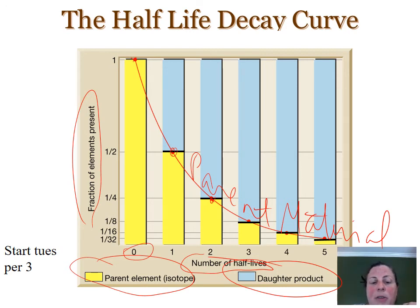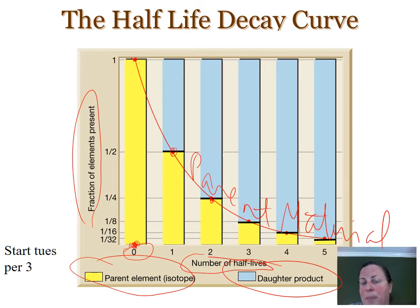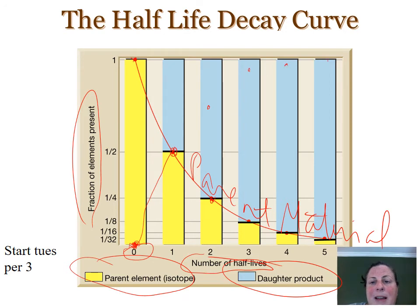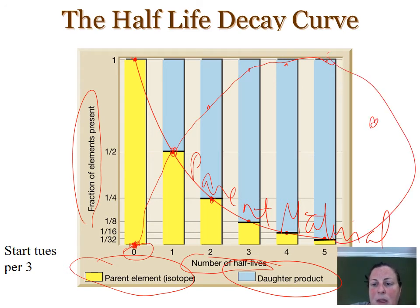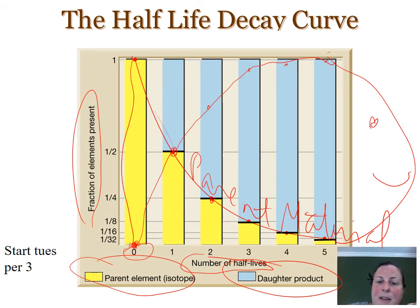You can also plot the increase in the daughter product. It's exactly the opposite — at zero you have zero daughter, it's all parent. At one half-life you'd be at half, at the second half-life you'd have three quarters. This ends up being exactly opposite of the other curve. What it ends up looking like to me is like a fish — and that's how you can remember that this is your decay curve. So we're looking at the decay of the parent and the increasing daughter on the other line.